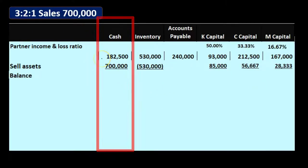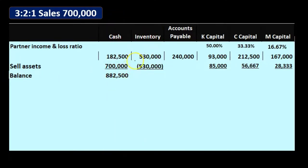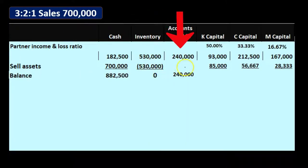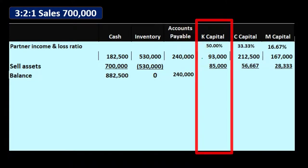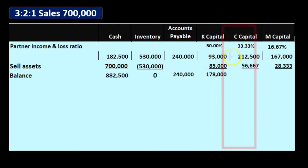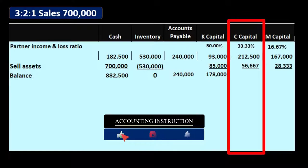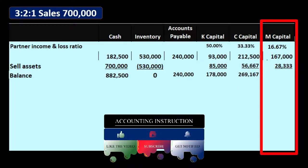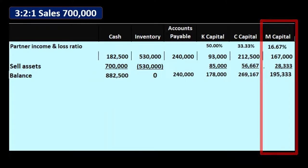The updated balances: cash goes from $182,500 up by $700,000 to $882,500. Inventory goes from $530,000 down to zero. Accounts payable remains at $240,000. K's capital goes from $93,000 up by $85,000 to $178,000. C's capital goes from $212,500 up by $56,667 to $269,167. M's capital goes from $167,000 up by $28,333 to $195,333.